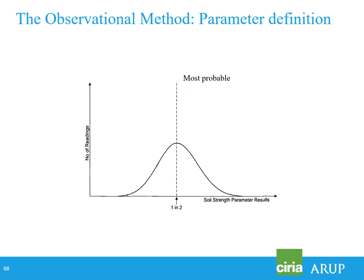Before going into detail, a few statistical definitions. Most probable is, in the normal distribution, smack dead in the middle — a 50-50 chance of being higher or lower. We don't choose most probable for our designs because clients won't thank us for a 50% chance of failure. What we choose is characteristic — just to the left of most probable. How far to the left is dependent upon the problem. Some people use phrases like 'worst credible,' which is somewhere down the tail to the left. In the observational method we focus on characteristic and most probable.